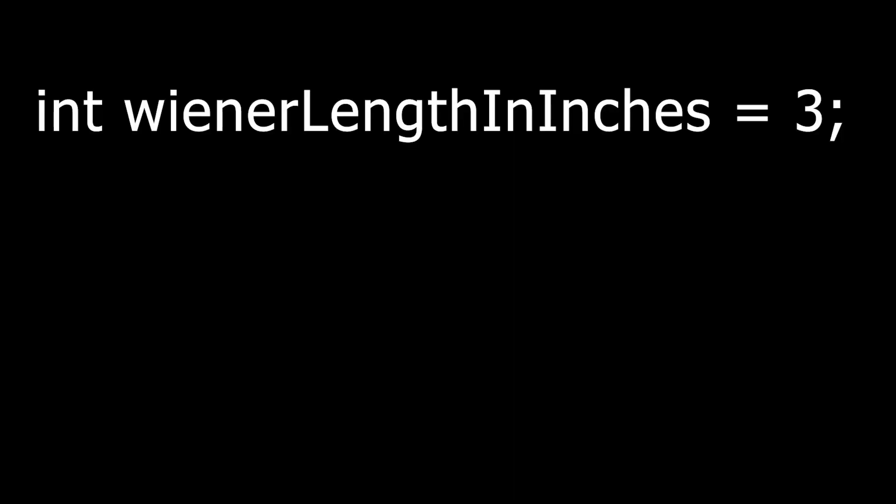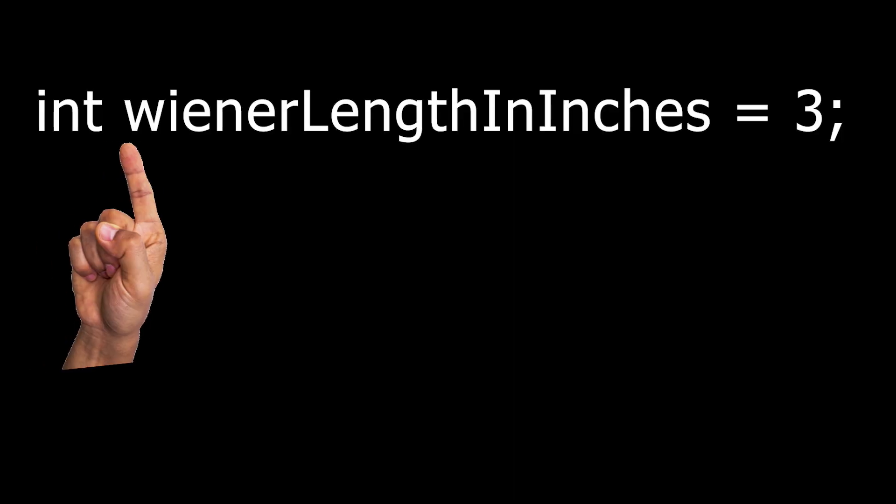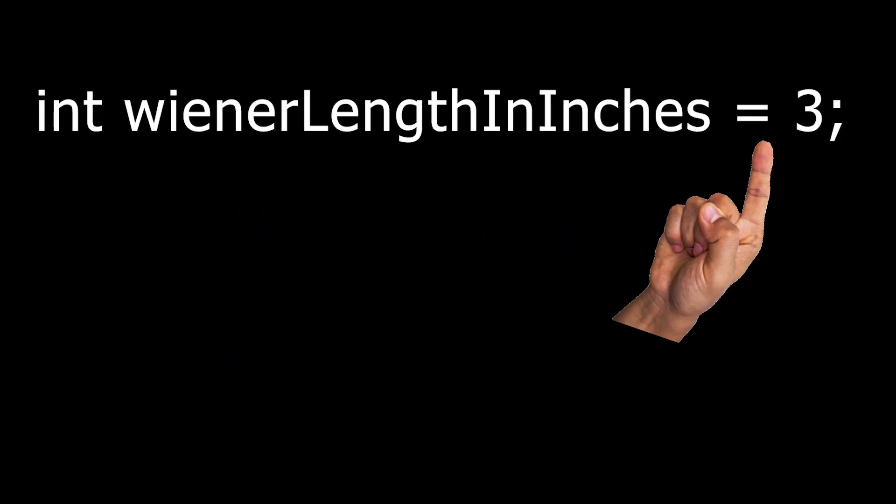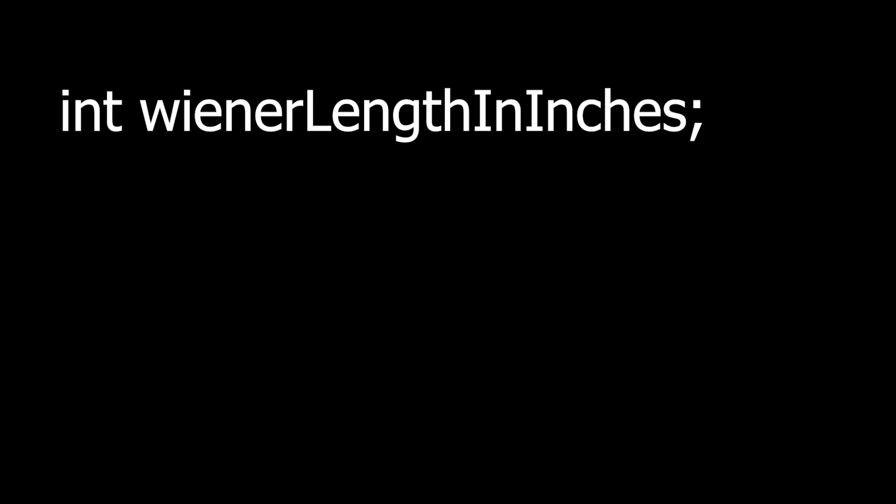C++ is known for being similar to Java — well, technically it's the other way around, but whatever. This relationship is mostly tied to the syntax. To initialize a variable, you must give it a type, a name, and either declare some data or leave it as an empty initialization.